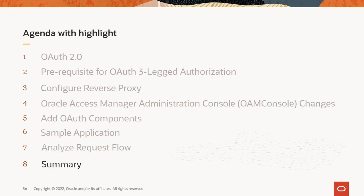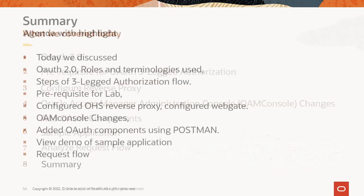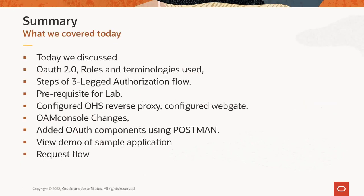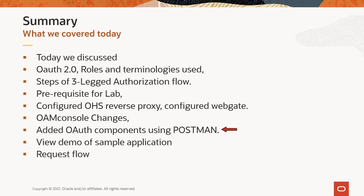In the final topic, we'll review the summary of today's presentation. Today we discussed OAuth 2.0 roles and terms used, went over the steps of the three-legged authorization flow, reviewed prerequisites for the OAuth lab, configured OHS reverse proxy, configured webgate, looked at various OAM console changes, added OAuth components using Postman, viewed a demo of the sample application, and understood the request flow using HTTP trace and application logs.